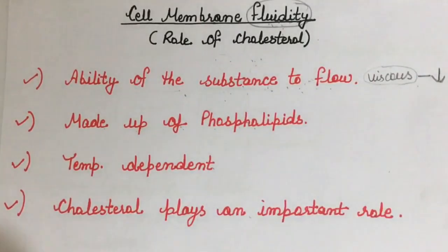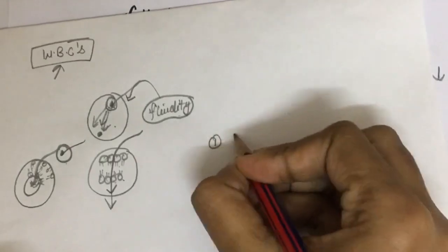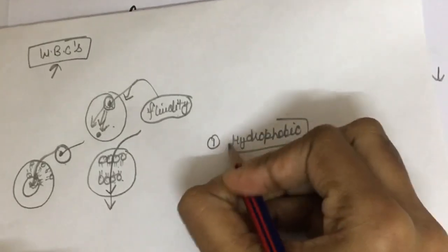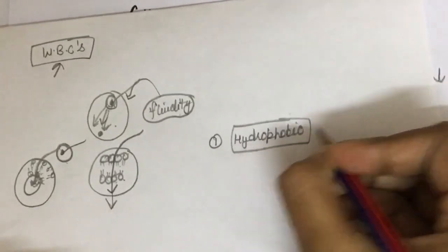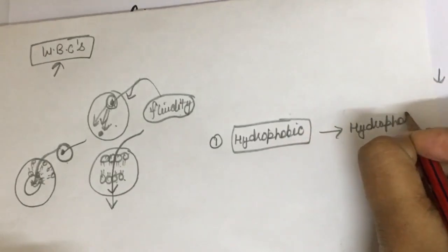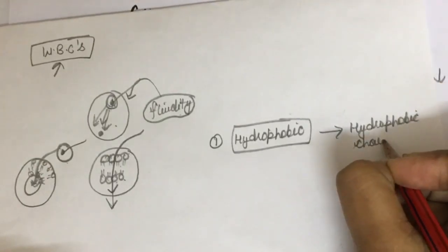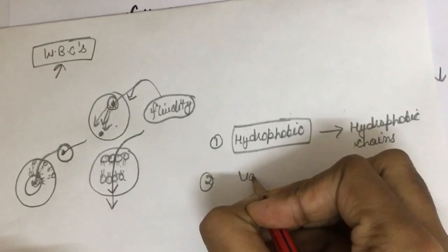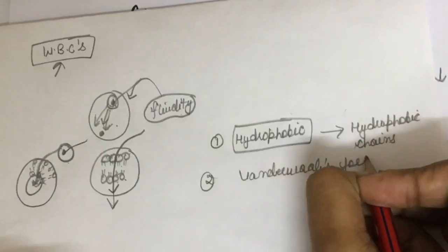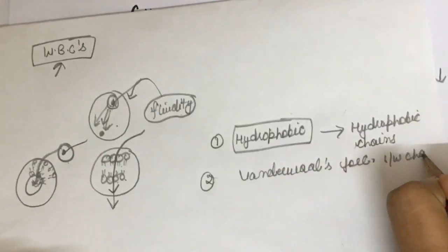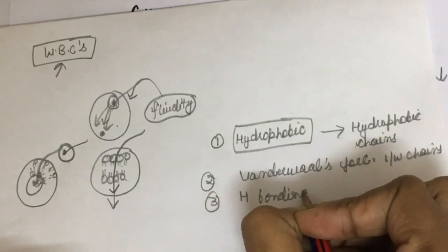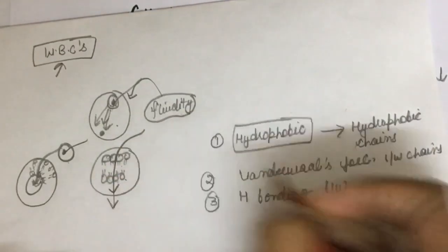The factors responsible for the maintenance of the lipid bilayer are: first, hydrophobic interaction between hydrophobic chains; second, van der Waals force of interaction; third, hydrogen bonding.